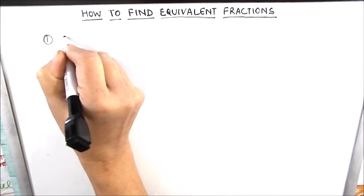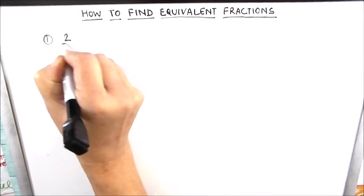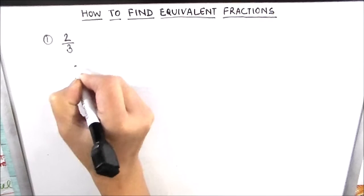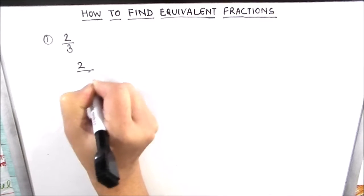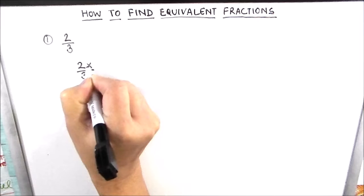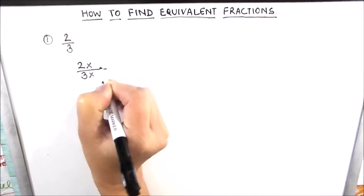Our first example is finding equivalent fraction to 2 by 3. For finding the equivalent fraction we will write the fraction like this and we will multiply and divide the fraction by the same number.